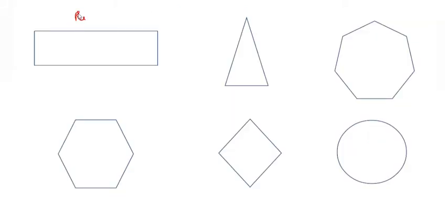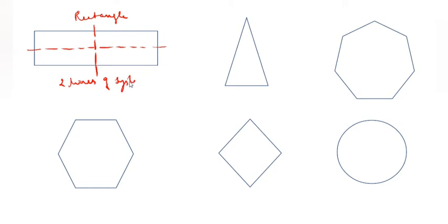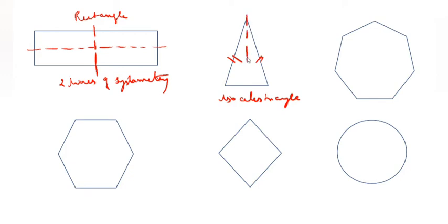This is a rectangle. Rectangle has how many lines of symmetry? This is 1, this is 2 — so 2 lines of symmetry. This is 1 line of symmetry — this is 1, this side and this are 2 sides equal, but this side is not equal. So, how many lines of symmetry? Only 1 line of symmetry.